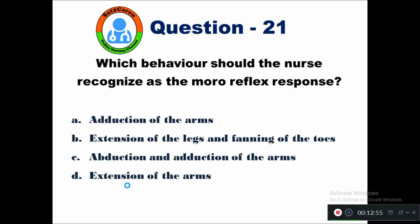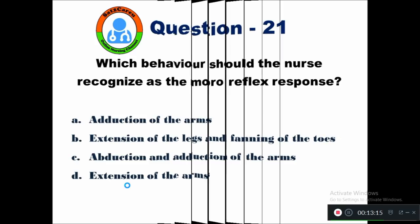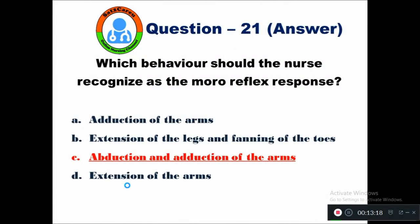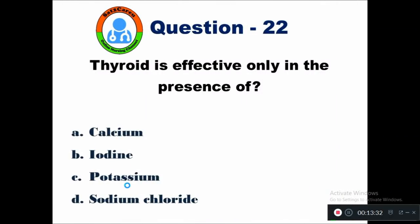Question 21: Which behavior should the nurse recognize as the Moro reflex response? Option A adduction of the arms, B extension of the legs and fanning of the toes, C abduction and adduction of the arms, D extension of the arms. In the Moro reflex, the child will elicit abduction and adduction of the arms. This is what the nurse must notice when assessing for a Moro reflex response.